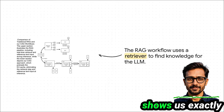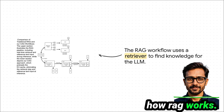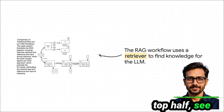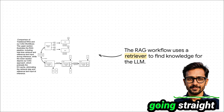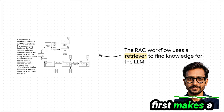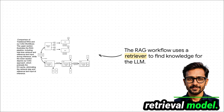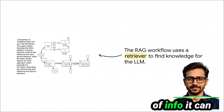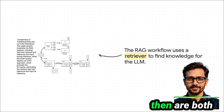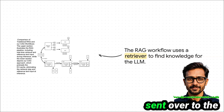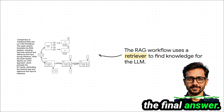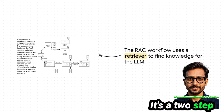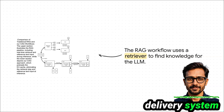This diagram shows us exactly how RAG works. See the query Q1? Instead of going straight to the LLM, it first makes a pit stop at a retrieval model. That model zips over to a knowledge base and pulls out the most relevant piece of info it can find, which we're calling K1. Then and only then are both the original question and that nugget of knowledge sent to the LLM to create the final answer, A1. It's a two-step process, like a just-in-time delivery system for facts.